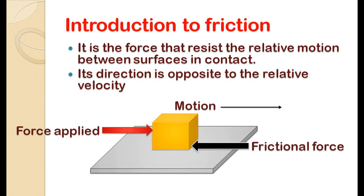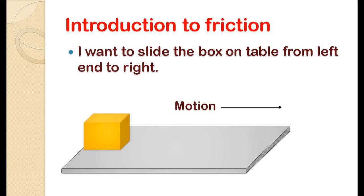So what is friction? In simple words, it is the force that resists the relative motion between surfaces in contact, and its direction is opposite to the relative velocity. Now we will see an example of a wooden box sliding over the table surface from one end to the other.